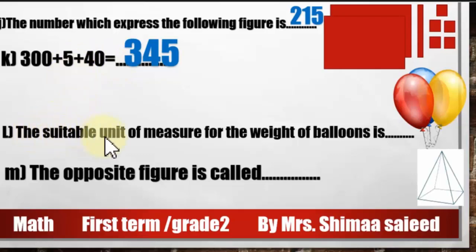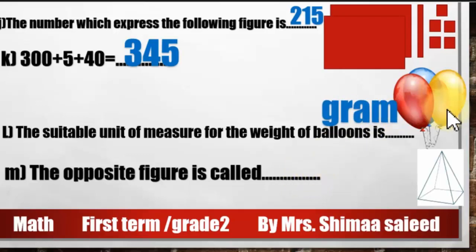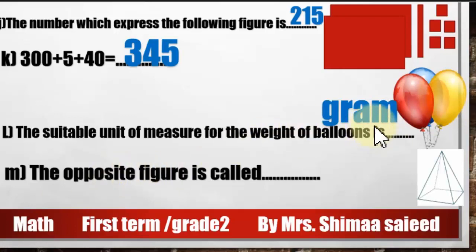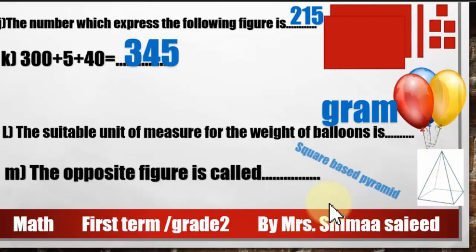The suitable unit for measuring the weight of balloons: is it gram or kilogram? Well done — gram! Because a balloon is very light, so we measure it in grams, which is the smaller unit. The opposite figure is called a square-base pyramid. Well done!